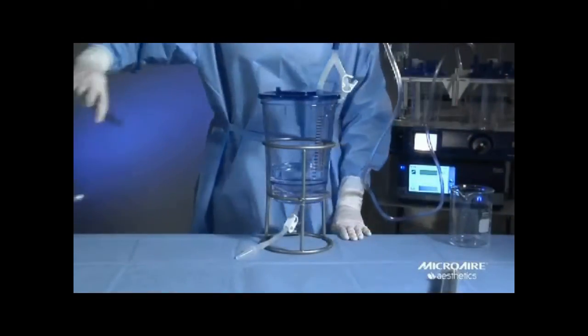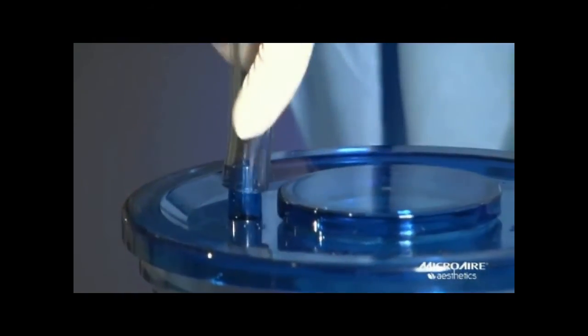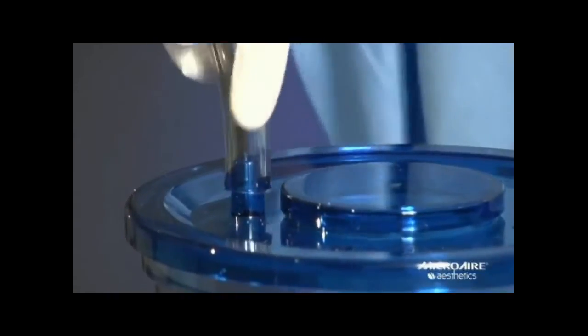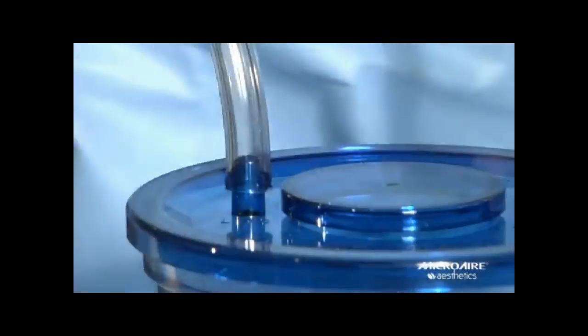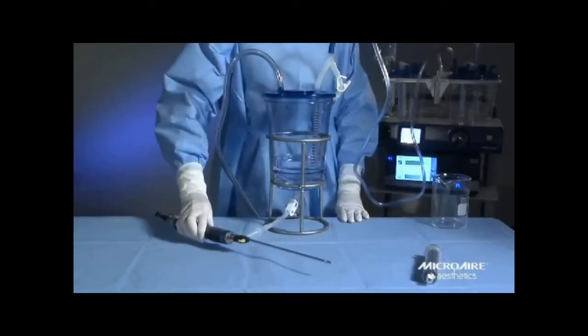The waste canister connects to your aspirator. Connect your harvest tubing to the lipo port. This port is designed to work with your pal tubing or conventional tubing. Connect the other end to your pal handpiece or your manual cannula.